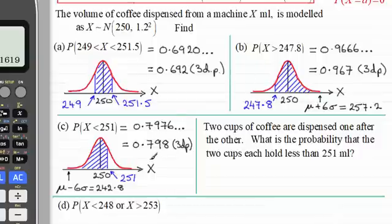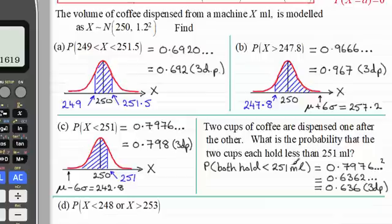Now I've got another example here which relates to this probability, but you could find you get similar questions in other examples relating to probabilities you may well have worked out earlier on in the question. Here we've got two cups of coffee dispensed one after the other. What is the probability that the two cups each hold less than 251 millilitres? Well, we've just seen that the probability of holding less than 251 millilitres is 0.7976 and so on. So if I were to draw a tree diagram where I looked at the contents of the first cup followed by the contents of the second cup, I would find that the probability that both cups each hold less than 251 millilitres would be to multiply 0.7976 with itself, in other words square it. That would be 0.7976 all squared, and that comes to 0.636 when rounded to three decimal places.